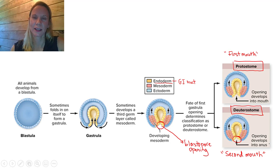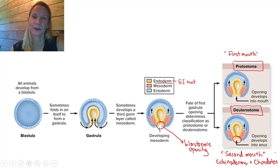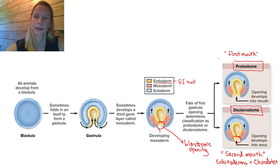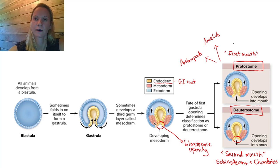There are only two groups of animals that are called deuterostomes: echinoderms like starfish, and chordates. Remember, we are a chordate. Those animals share this evolutionary relationship. All other animals, which include five different groupings, are called protostomes - this includes the arthropods, the annelids, the flatworms, the roundworms, and the mollusks.